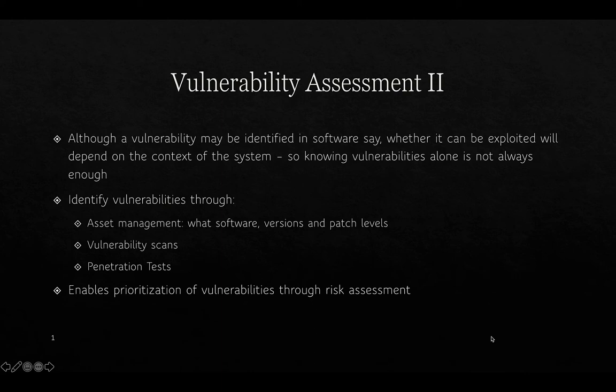We identify vulnerabilities through asset management, which allows us to understand what assets we have — the hardware, software, specific versions, and what patches have been applied. We can also assess vulnerabilities through vulnerability scans, which we'll do in one of the labs, and by employing third-party ethical hackers to try to break into a system and explore vulnerabilities through penetration tests. Once vulnerabilities are discovered, we can prioritize them through the risk assessment process and know what to do as a consequence.